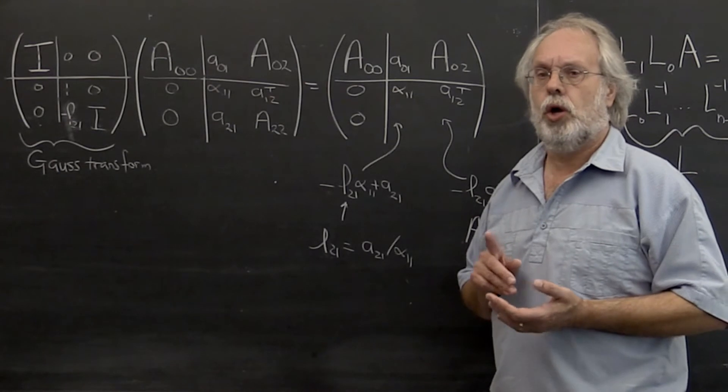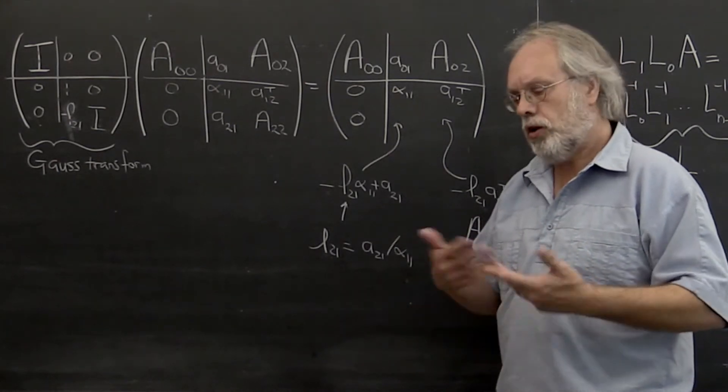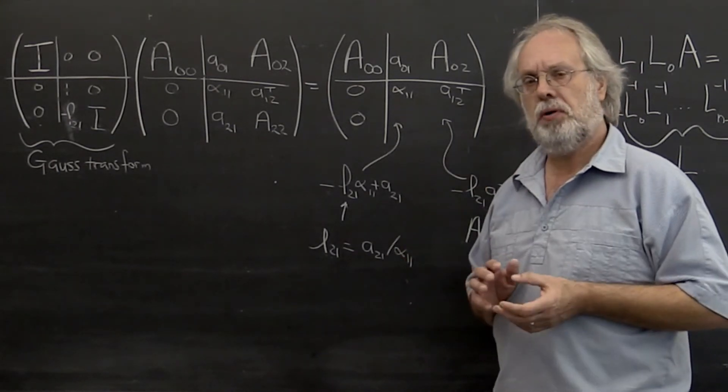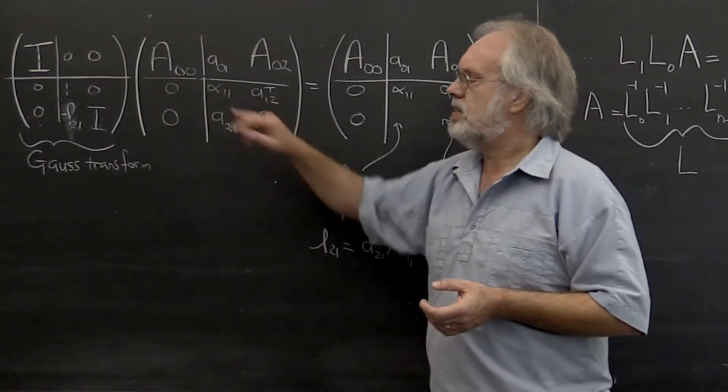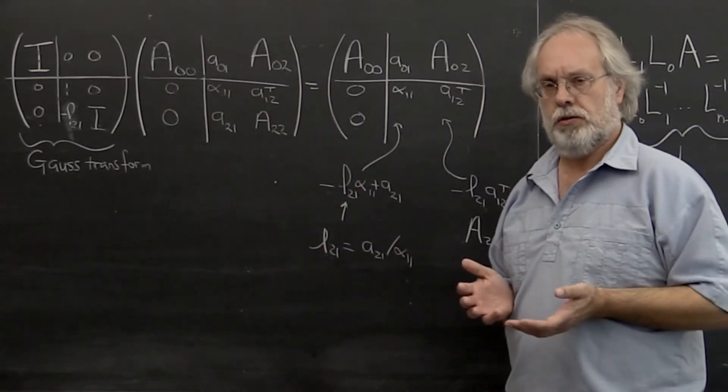When you compute, little errors come up anyway, I'll just replace that zero by a number that's almost zero.